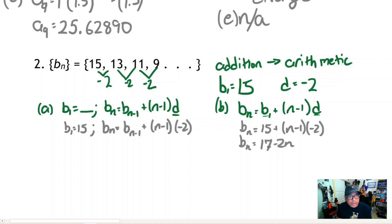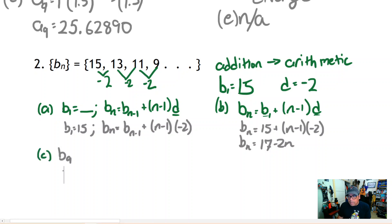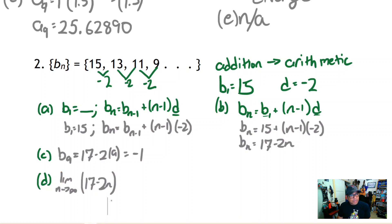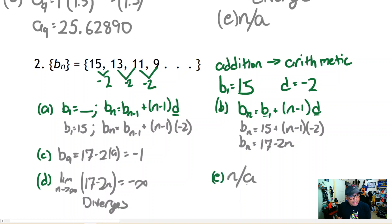The explicit rule for an arithmetic sequence is b_n equals b_1 plus (n−1) times d. Filling in the blanks: b_1 is 15 and d is negative 2, which simplifies to b_n equals 17 minus 2n. For part (c), the ninth term is 17 minus 2 times 9, giving negative 1. For part (d), as n approaches infinity, 17 minus 2n approaches negative infinity — the terms keep decreasing, so the sequence diverges and there is no limit.